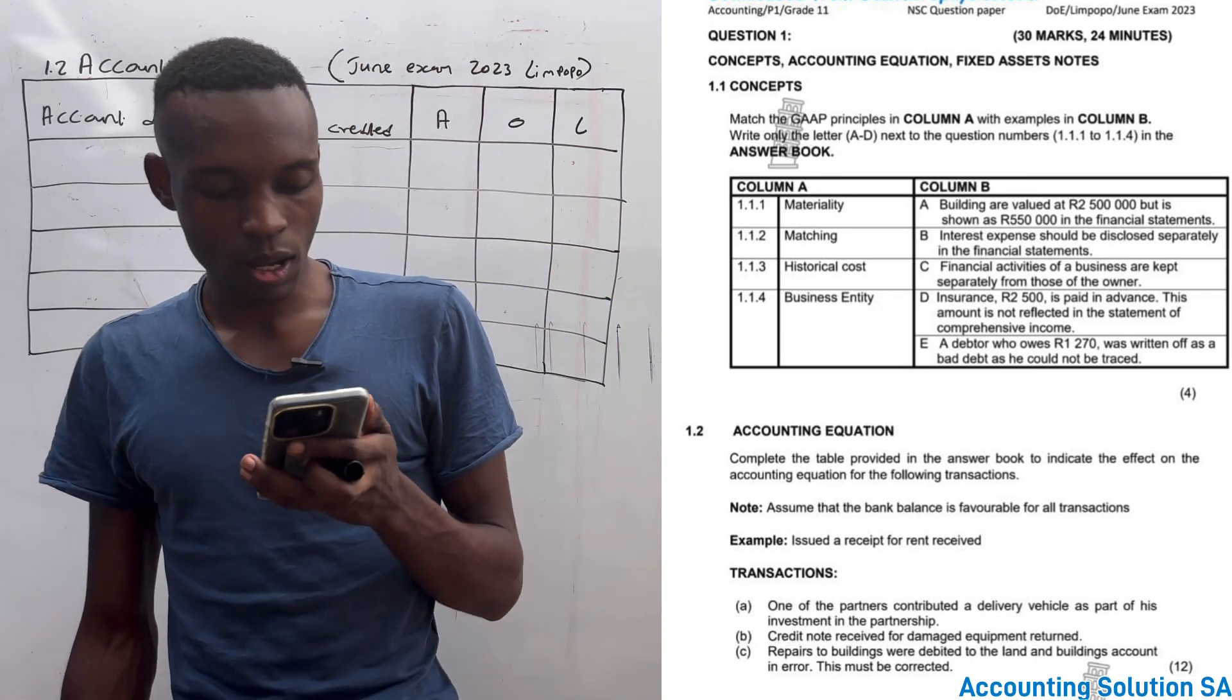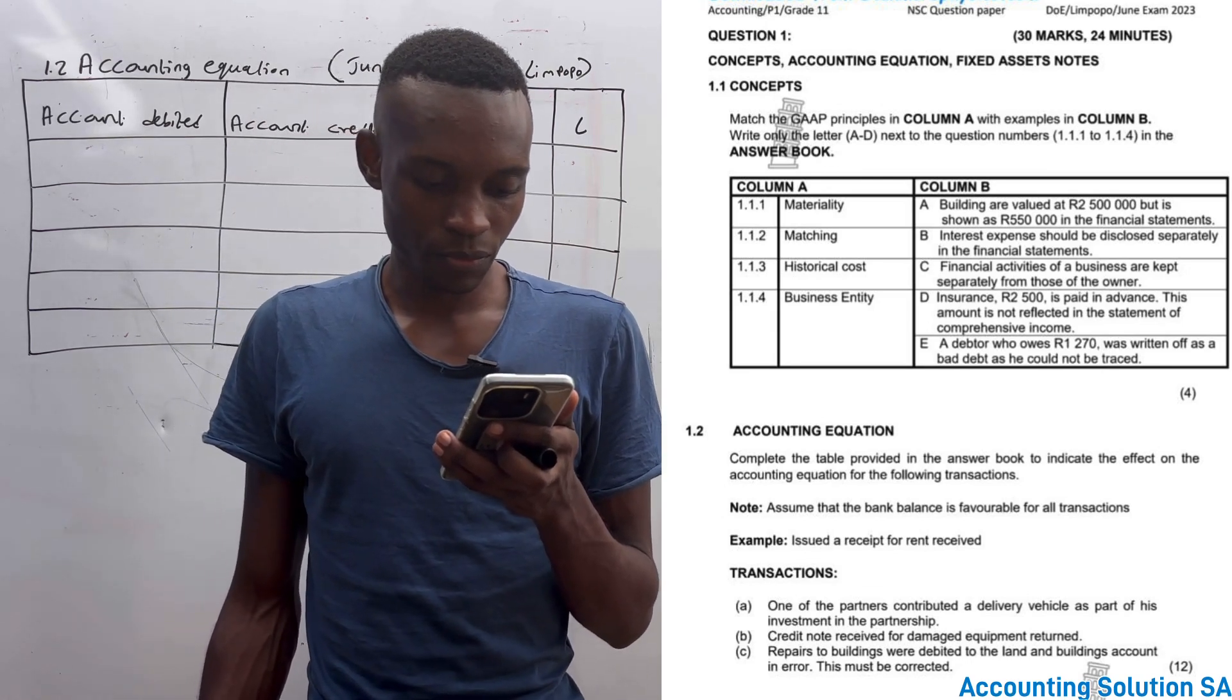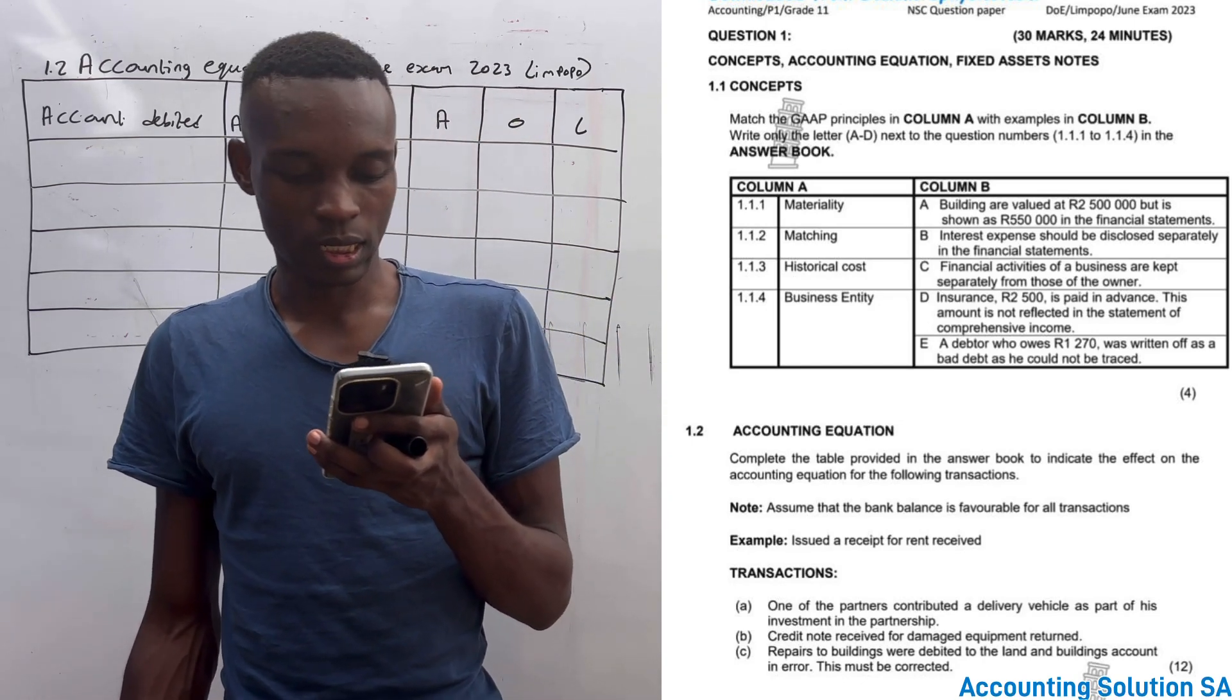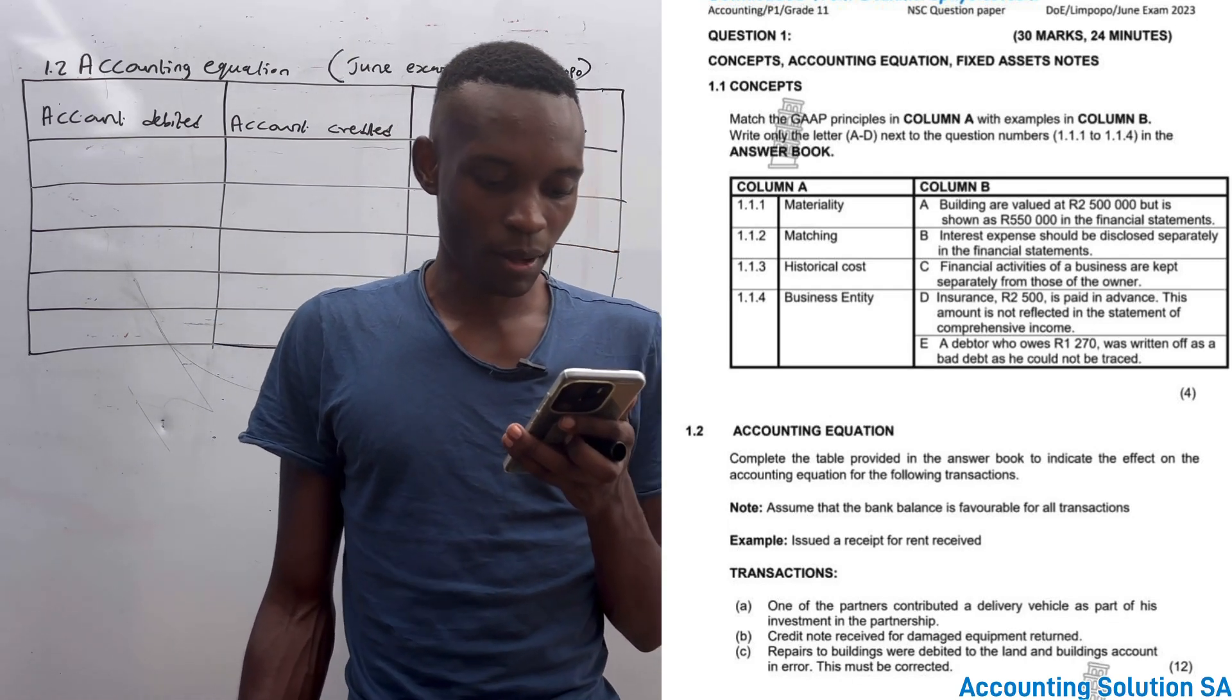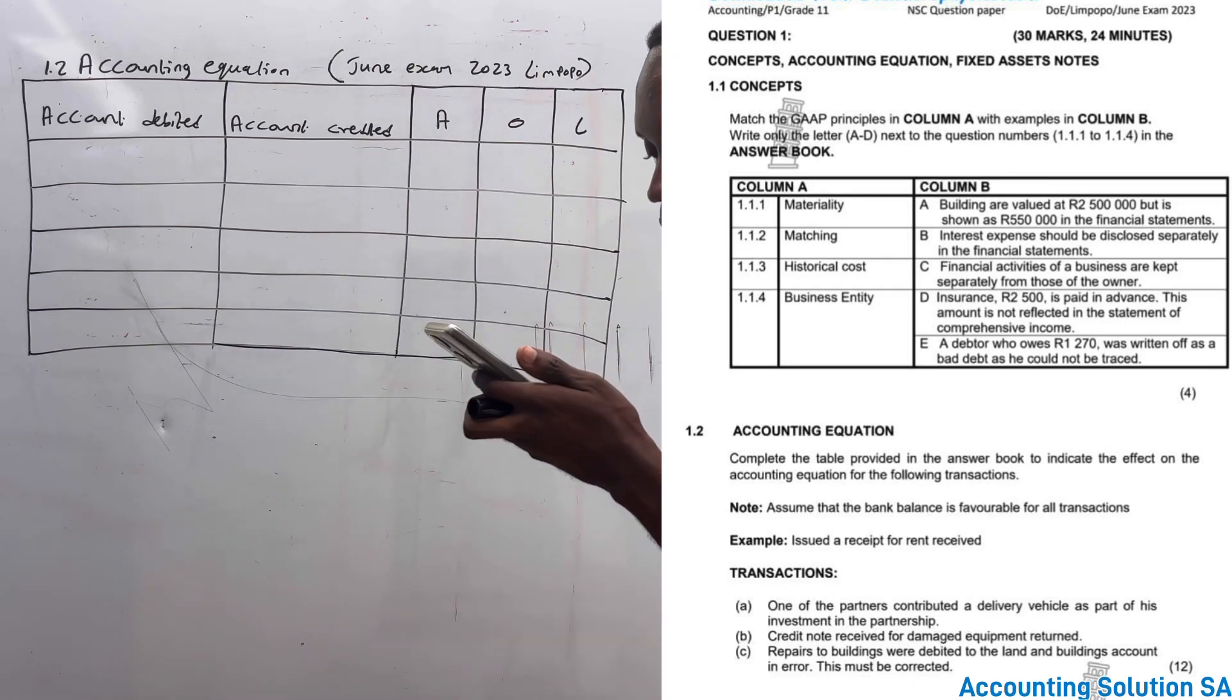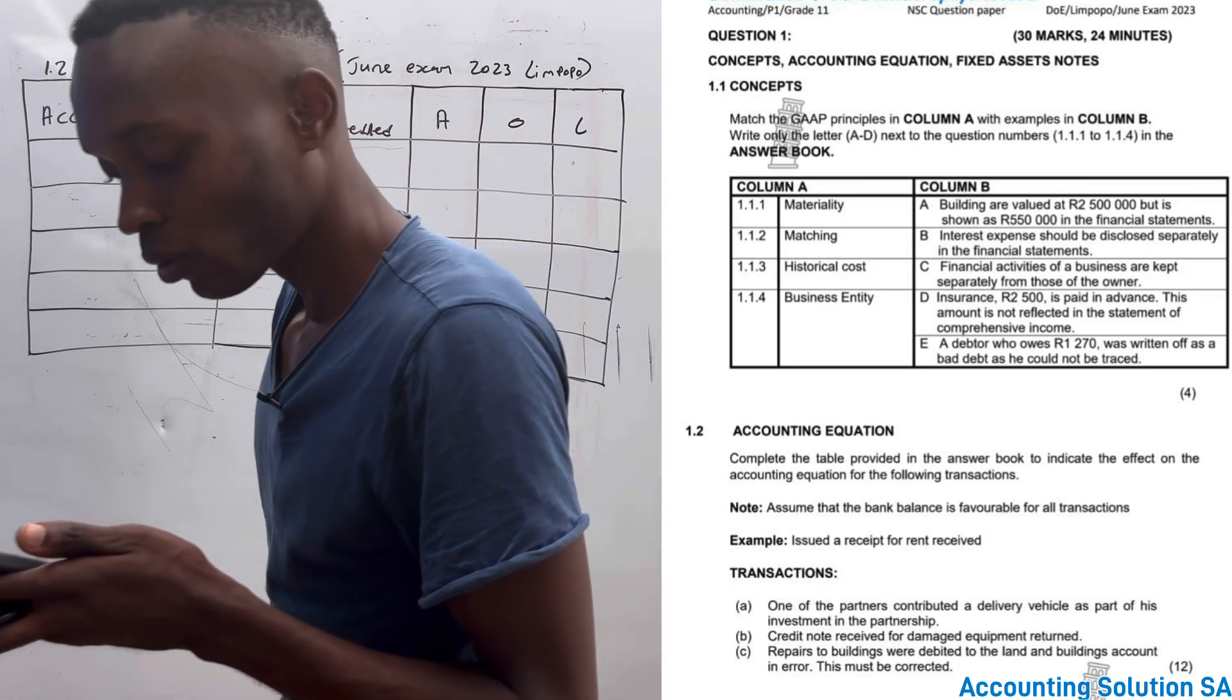In this video paper we are going to do accounting equation. Let's start with our accounting equation. They said complete the table provided in the answer book to indicate the effect on the accounting equation for the following transactions, and assume that the bank balance is favorable for all transactions.